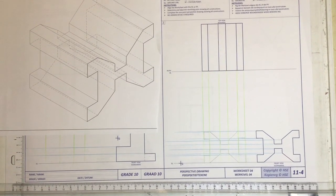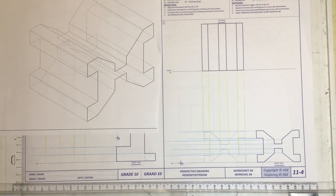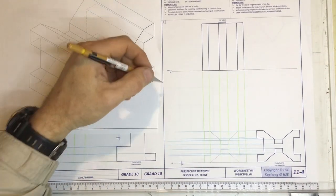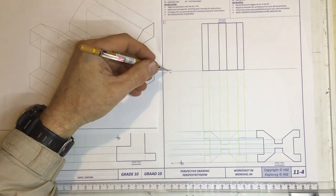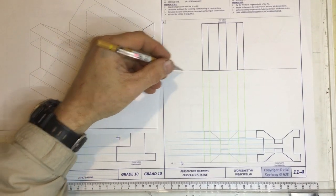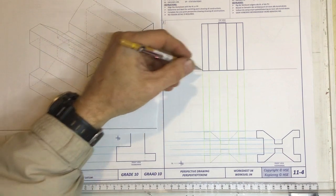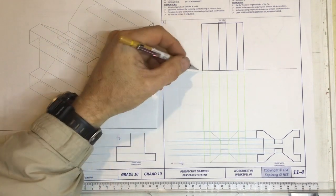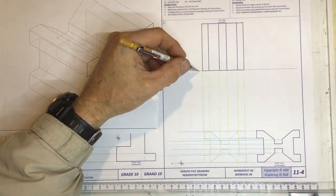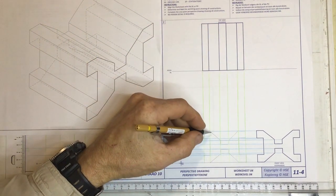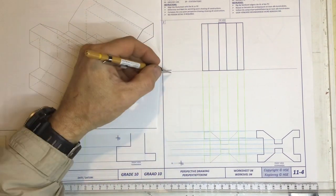We're going to be looking at one-point perspective drawing. A few little things that you need to get to know is what they call the picture plane. Anything that lands on that picture plane, I'm going to be able to see in my picture. That's very important.